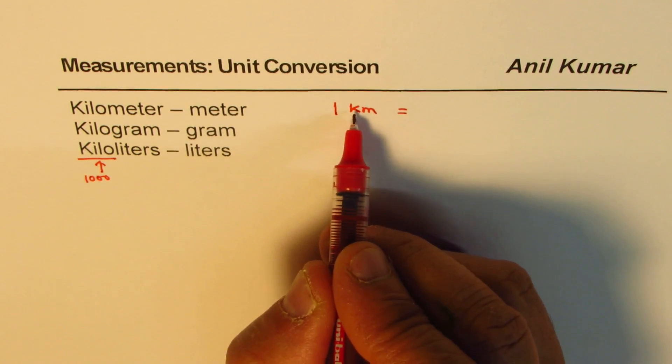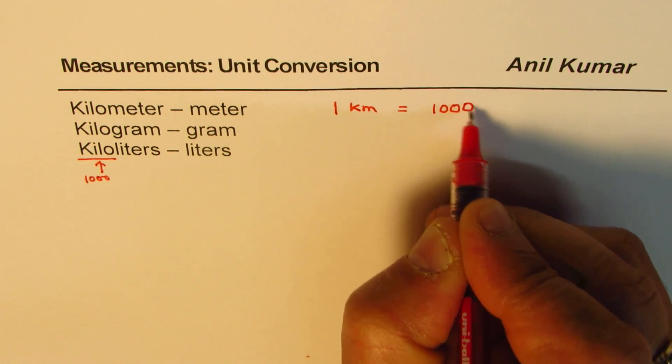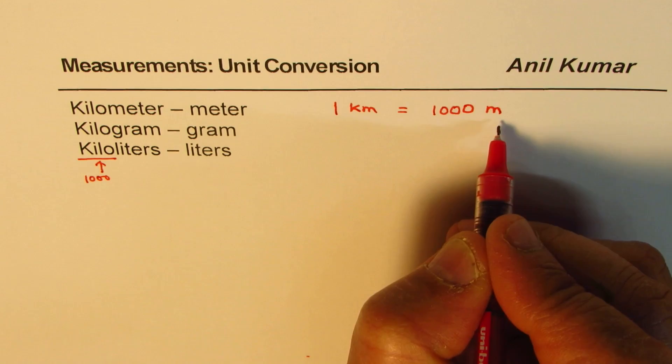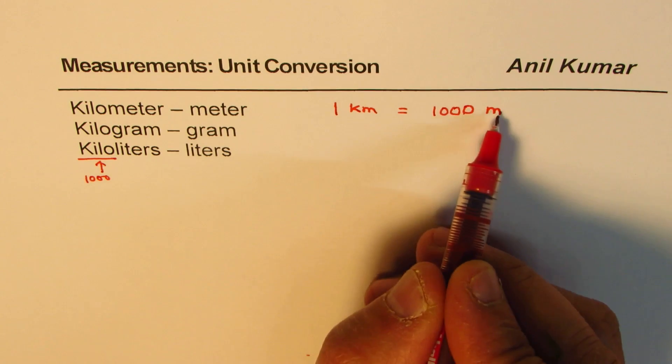So when I say 1 kilometer, I say 1 thousand meters. Does it make sense to you? Kilo means thousand. So I wrote 1 thousand meters.